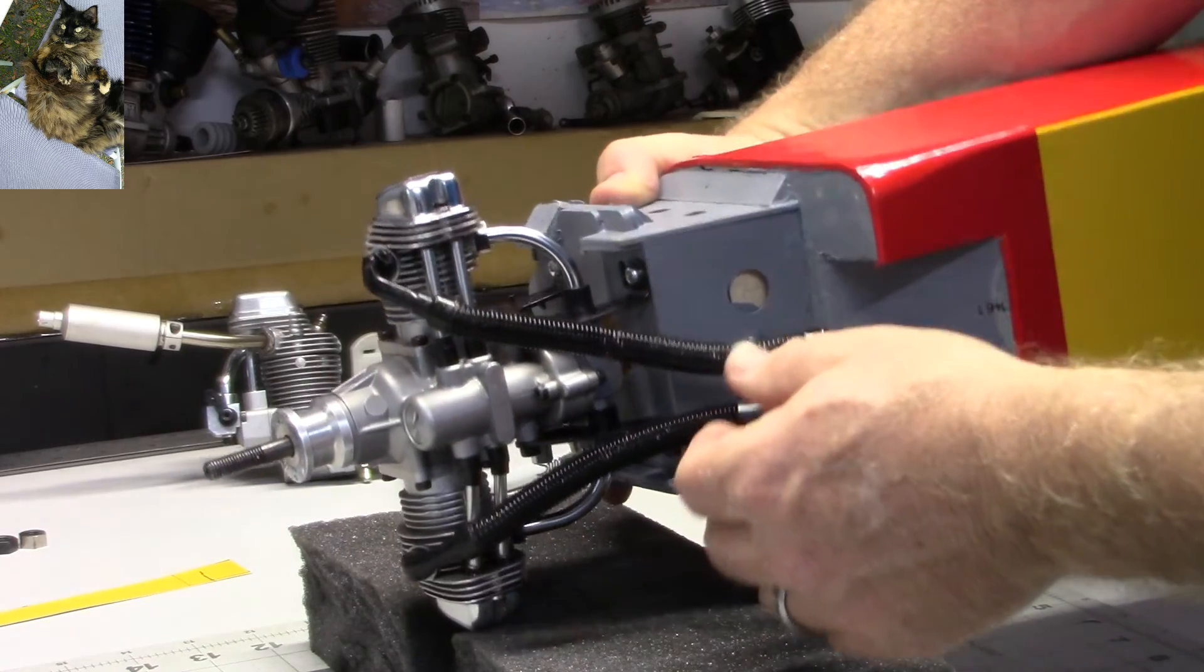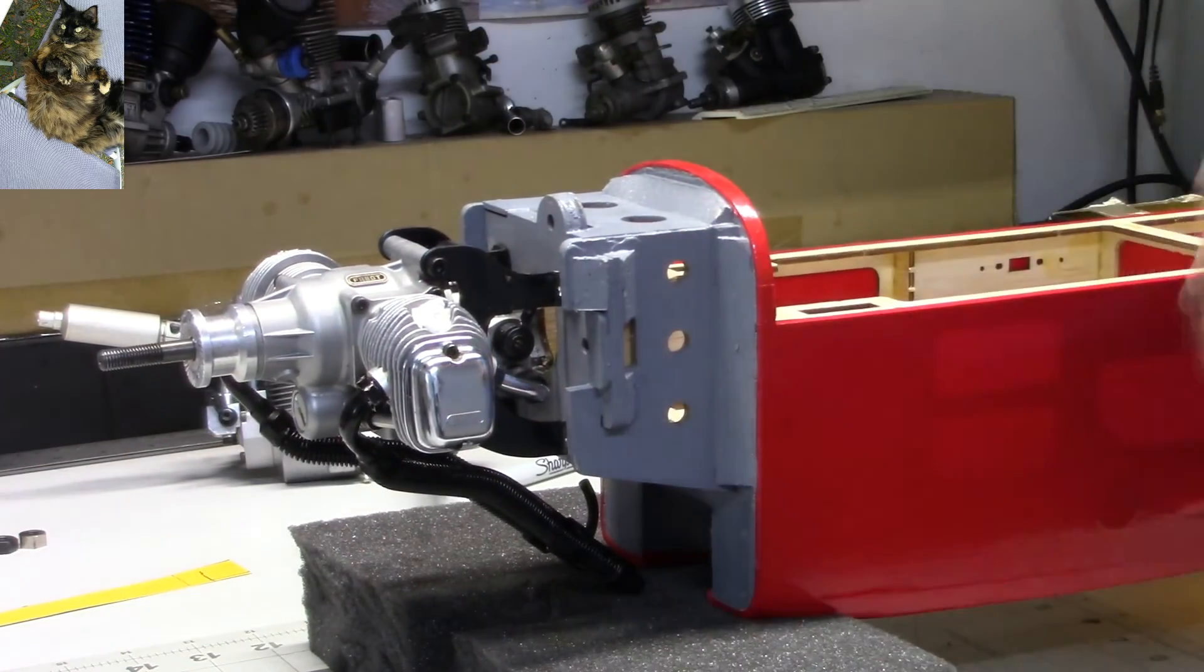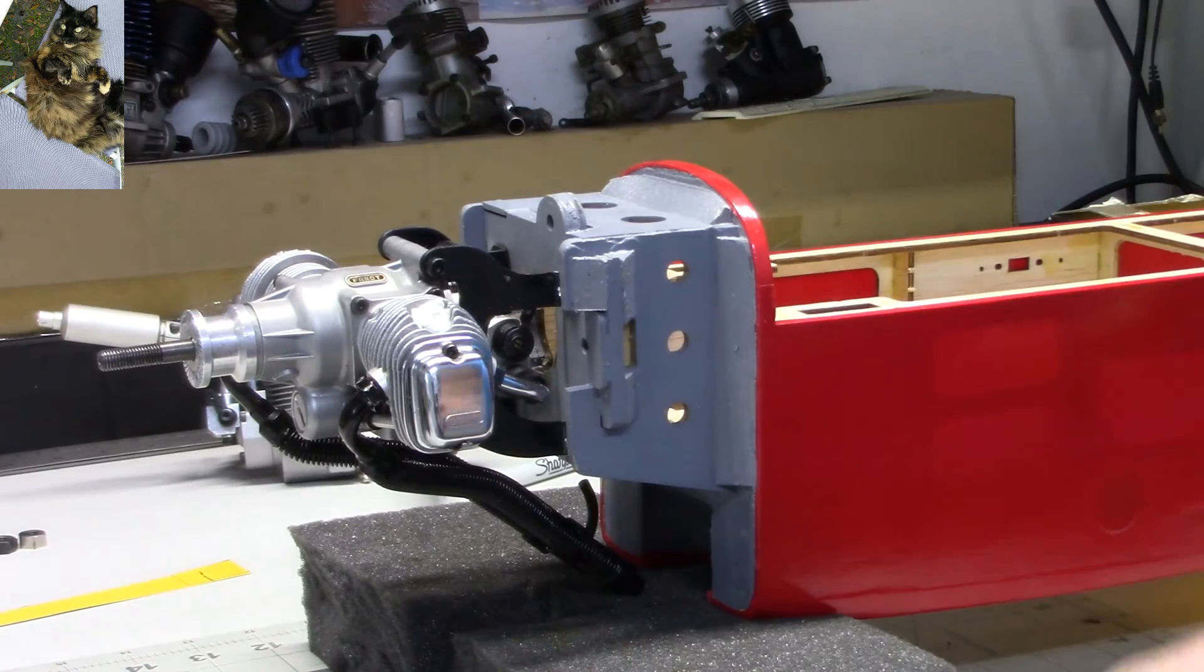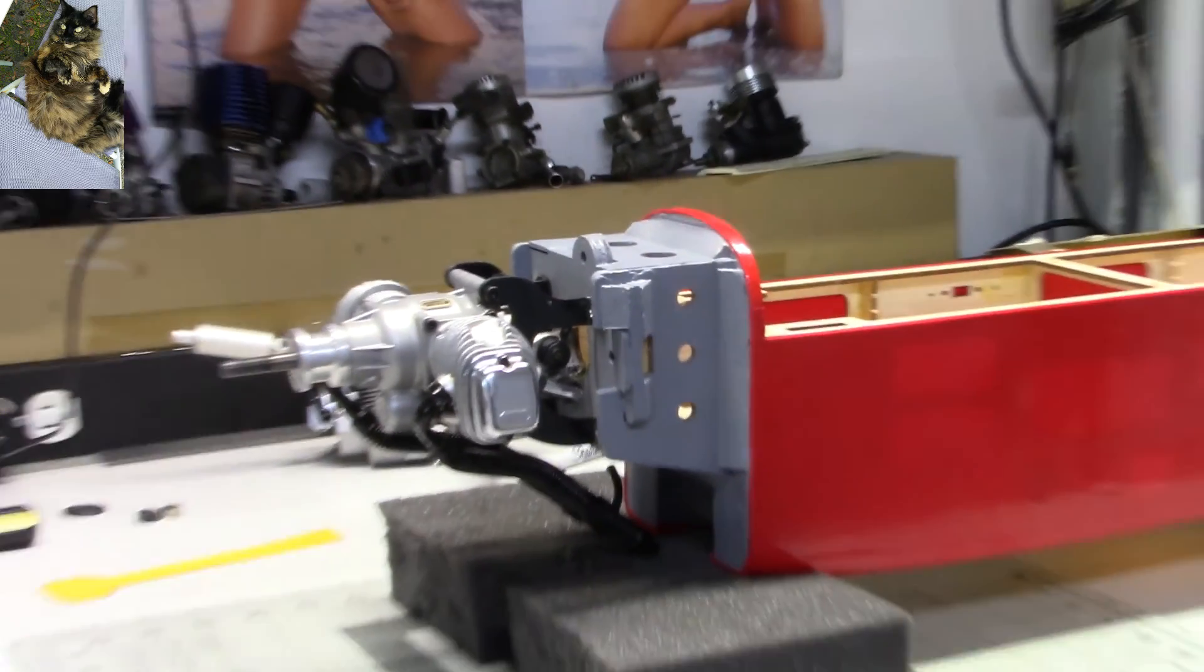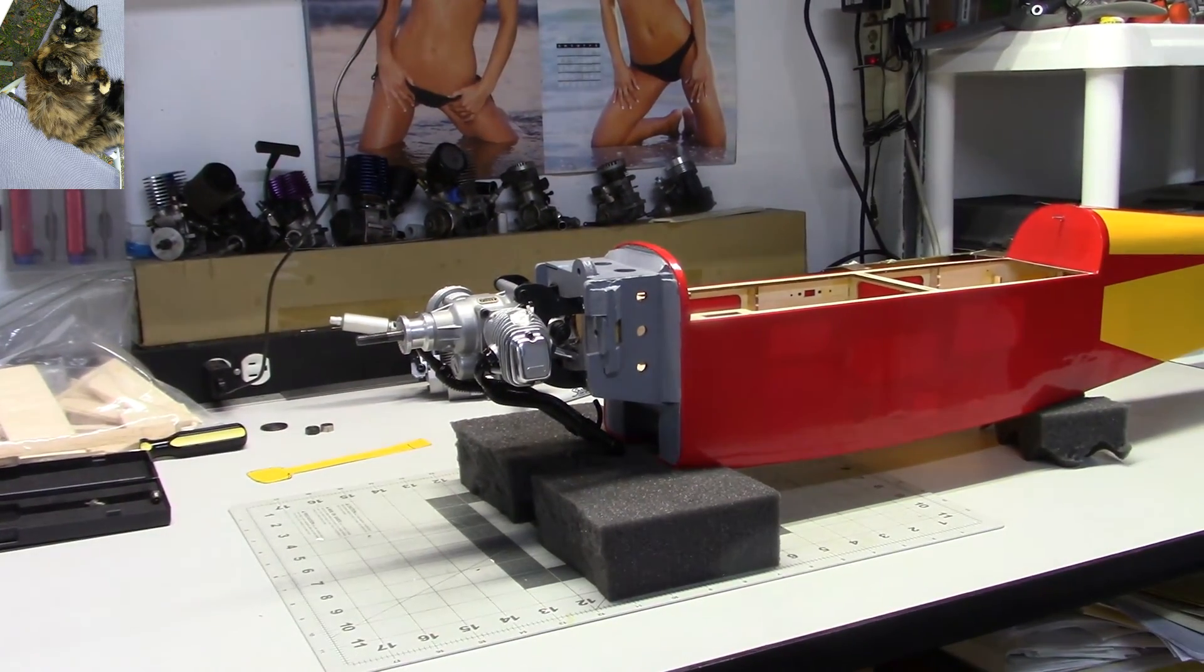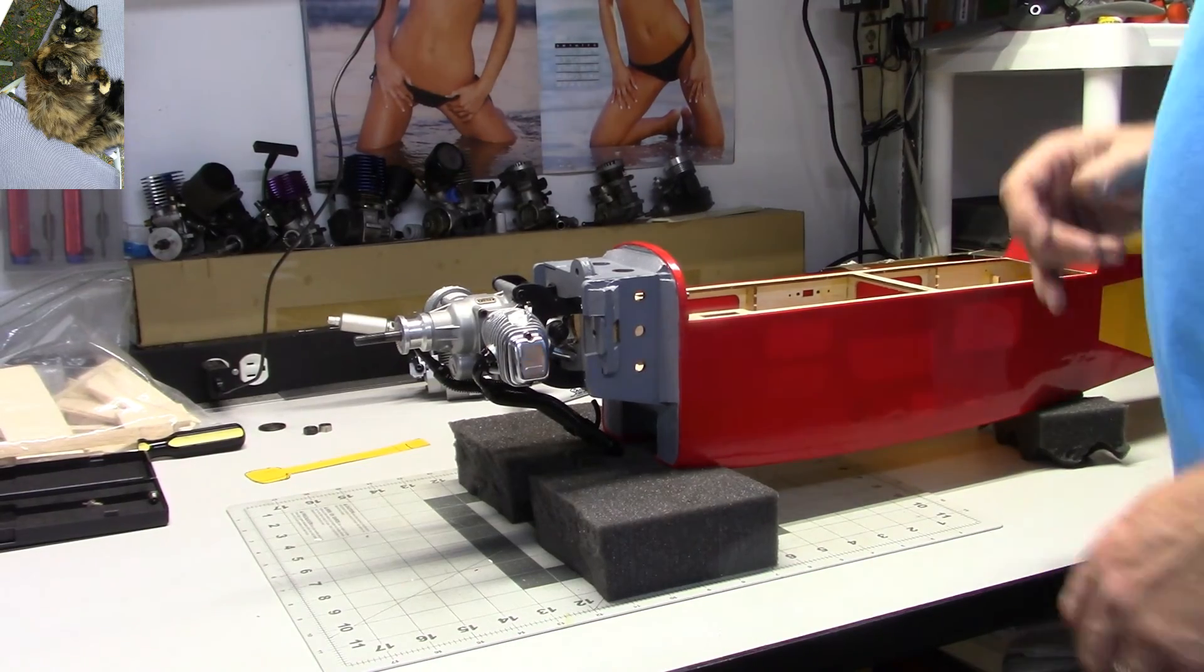You can see my flex exhaust here. I had to kind of bend it, shape it so it would come out the right angle. That's the update on the Space Walker. I'm going pretty slow on it because I've got all the other projects going on, as you can see on the table. But anyway, that's the status of this assembly right now. Thank you for watching.